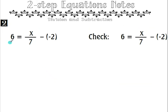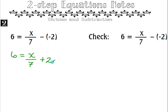For example 2, we have 6 equals x divided by 7 minus negative 2. When working with these equations with a double negative, my advice is to rewrite the equation so we don't have that double negative. Minus negative 2 is the same as adding 2, so rewriting that equation will help if you have any issues with those types of equations. In this case we are going to subtract 2 from both sides.